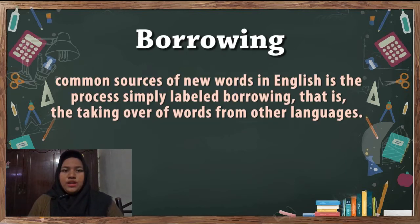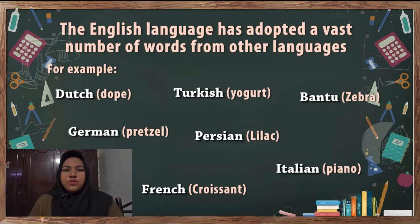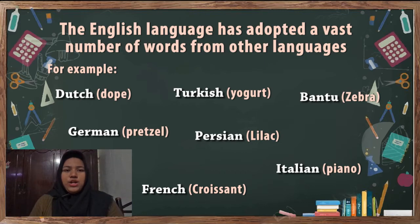Fourth, borrowing. Borrowing is one of the most common sources of new words in English — the process simply labeled borrowing. It is the taking over of words from other languages. The English language has adopted a vast number of words from other languages, including Dutch: dope; Persian: lilac; Italian: piano; German: puzzle; and so on.